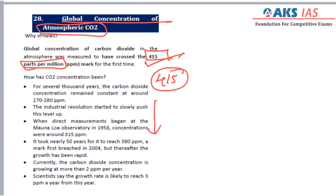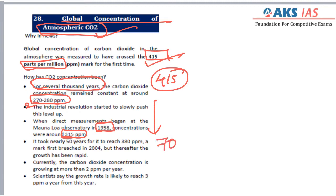This topic covers the increase in the concentration of atmospheric CO2. For several thousands of years, this concentration remained constant at 270 to 280 parts per million. But after the Industrial Revolution started, it was observed at 315 PPM in the year 1958. Within 60 to 70 years of time, it has increased by 100 PPM. This is a drastic increase due to intense industrial activity and the burning of fossil fuels.